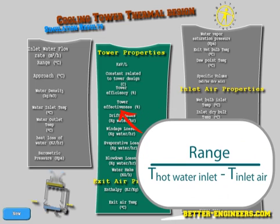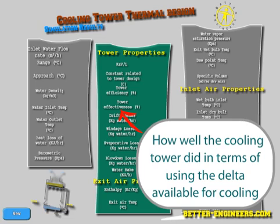Tower effectiveness, also in percentage, is the ratio of the range to the difference between the temperature of the hot water and the inlet air temperature. In other words, this tells us how well the cooling tower did in terms of using the delta available for cooling.